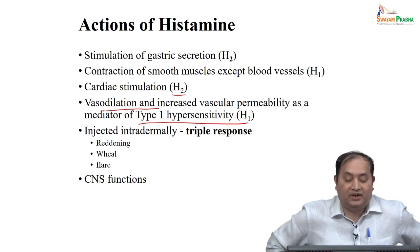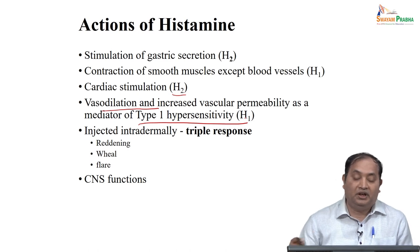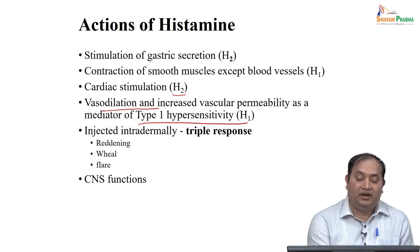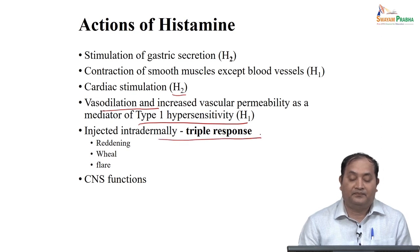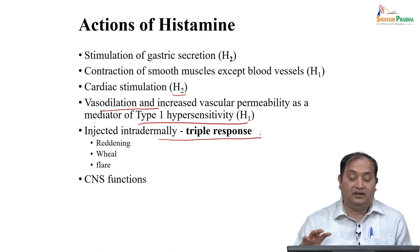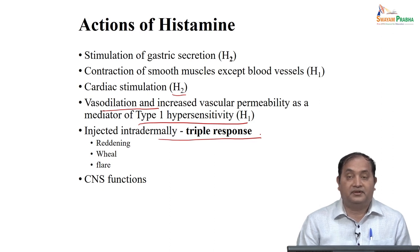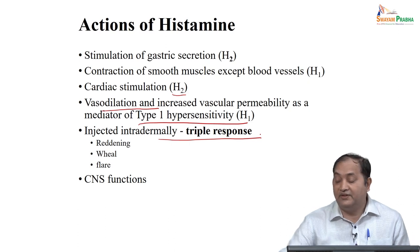Another very useful test is the triple response, used to assess whether a person is allergic to any drug. You get a triple response when you inject histamine intradermally. The response is redness, swelling, and typically wheal and flare reactions. H3, H4, and H5 receptors are also expressed and histamine also has CNS functions.